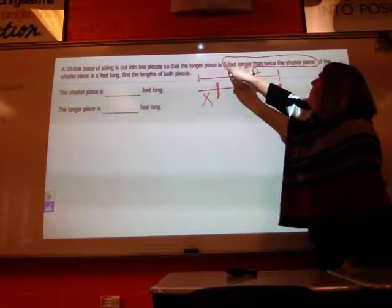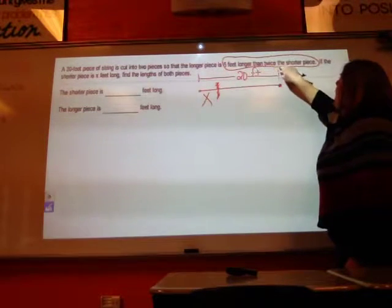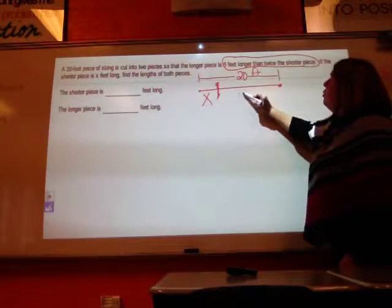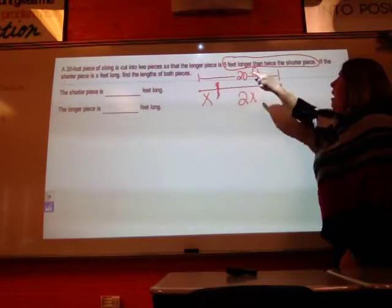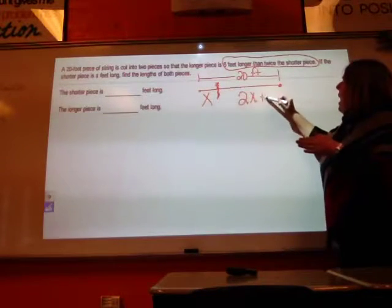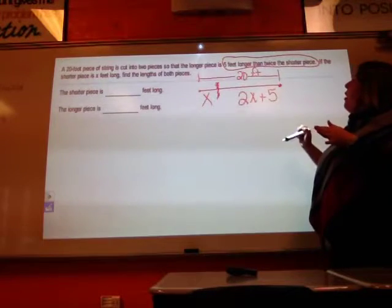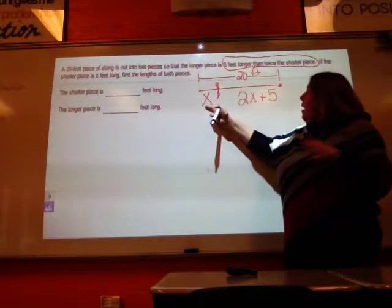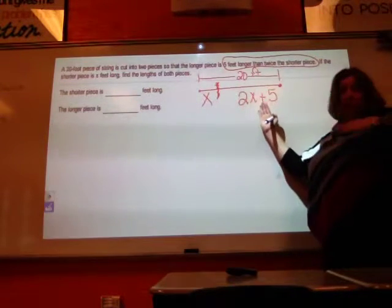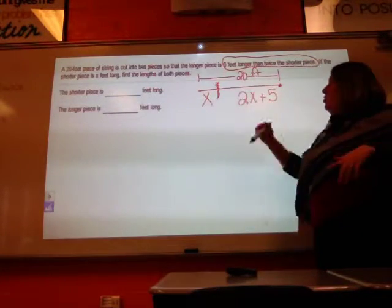The longer piece is five feet longer than twice the shorter piece. So twice the shorter piece is going to be 2x. Five feet longer than that means I have to add five to whatever I had. So the short piece is x. The long piece is 2x plus 5, and I know that together they're going to get me 20.